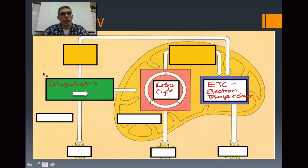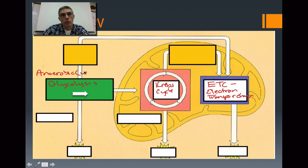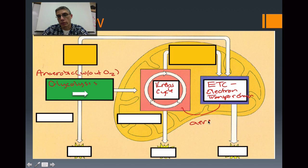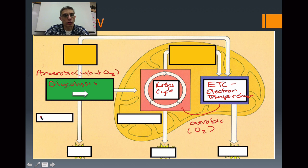Please remember that glycolysis is considered anaerobic. Anaerobic basically means without oxygen, so oxygen is not necessary for glycolysis to occur. The Krebs cycle and ETC are both considered aerobic, which means that they do require oxygen — oxygen is necessary for them to actually take place. Glycolysis will occur in the cytoplasm of the cell, and the Krebs cycle and ETC will occur in the mitochondrion.